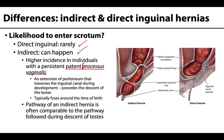The processus vaginalis is a naturally occurring structure in utero — an extension of peritoneum that traverses the inguinal canal to the scrotum during development, preceding the descent of the testes. Around birth, the proximal portion of the processus vaginalis occludes or closes, with a persistent portion surrounding the testes, closing the pathway between the peritoneal cavity and the scrotum. Those with a patent or persistent processus vaginalis have an easier pathway for herniation contents to descend to the tunica vaginalis of the testes in the scrotum.